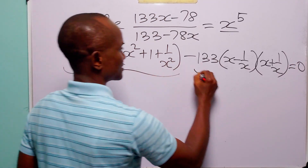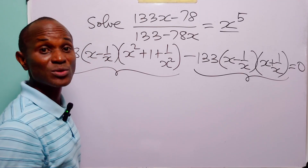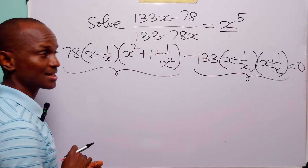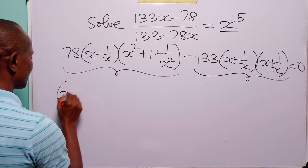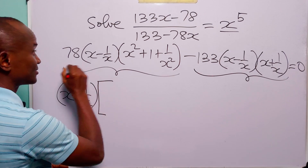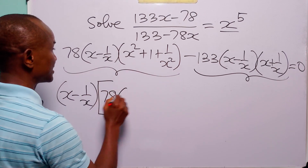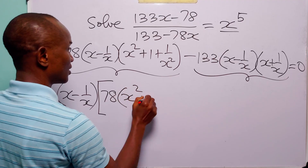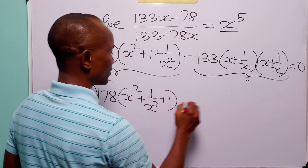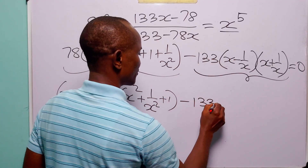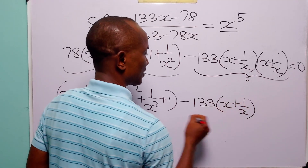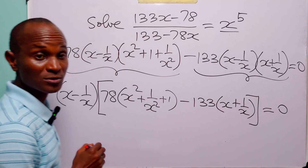When you look at these two terms, you will see that we have the common factor x minus 1 over x. So we can factorize that out. When we do that, we have x minus 1 over x into 78 times x squared plus 1 over x squared plus 1, minus 133 times x plus 1 over x, and of course this is equal to 0.